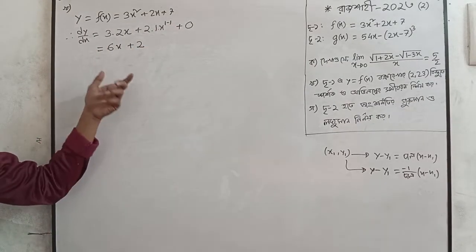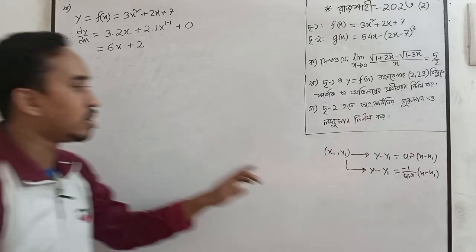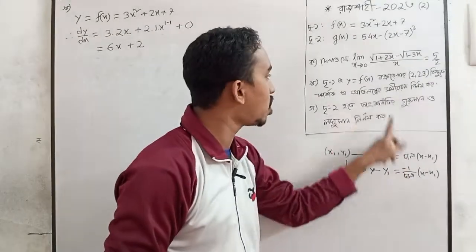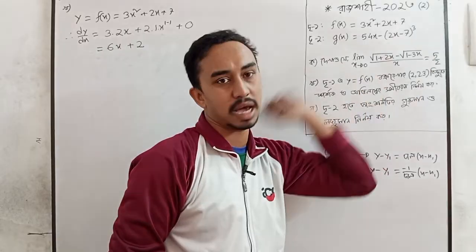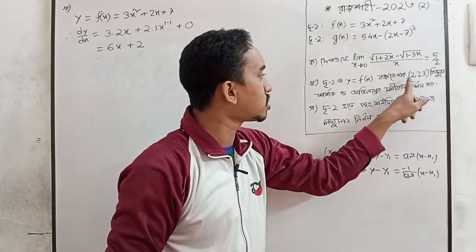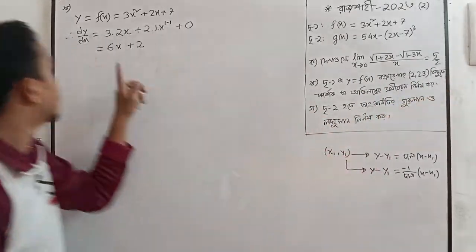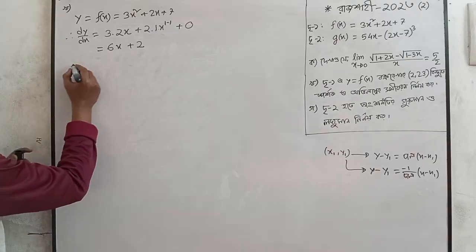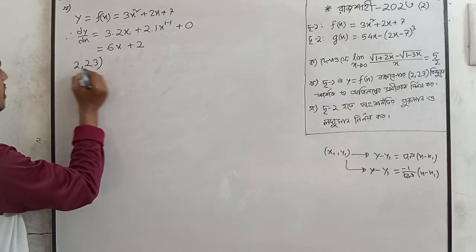We have to do this because dy/dx is equal to the slope. We are computing the slope, which is equal to 14 at x equals 2.